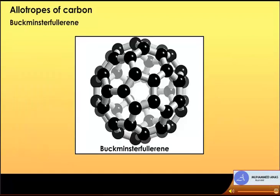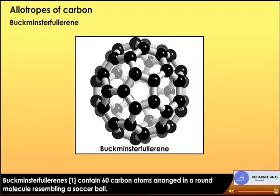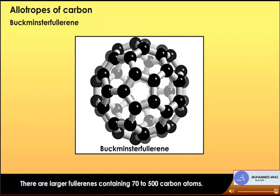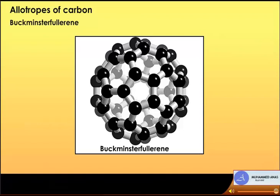Buckminsterfullerene is a pure form of carbon. C60 contains 60 carbon atoms arranged in a round molecule resembling a soccer ball. There are larger fullerenes containing 70 to 500 carbon atoms. Fullerenes have been found to exist in interstellar dust as well as in geological formations on Earth.